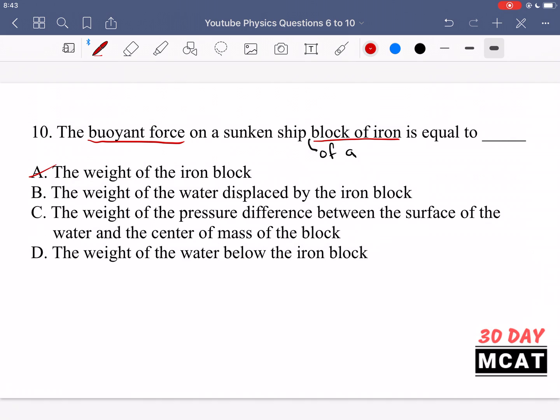So it's not the weight of the iron block, A is incorrect. B is correct. It's the weight of water displaced by the iron block. Option C is saying the weight of the pressure difference between the surface of the water and the center of mass of the block. No, it's not about pressure differences or the center mass, it's just about weight of water displaced. And option D is saying the weight of water below the iron block. No, it's not about how much water is below you, it's how much by sinking into a body of liquid, how much liquid have you displaced. So D is also incorrect, B is the correct answer here.